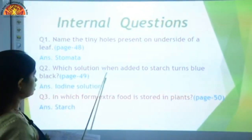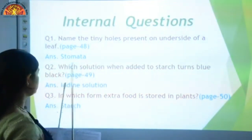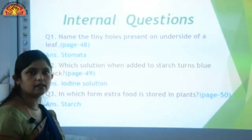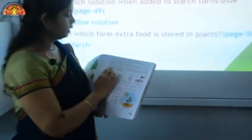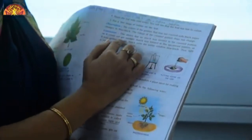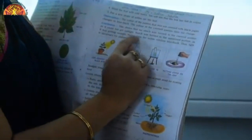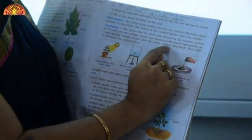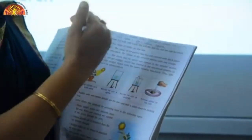Second question: which solution, when added to starch, turns blue-black? Answer is iodine solution, and it is given on page number 49. Open page number 49 — in the second paragraph, third line: 'Starch turns the iodine solution blue-black.' Underline this line and write the question above the paragraph.